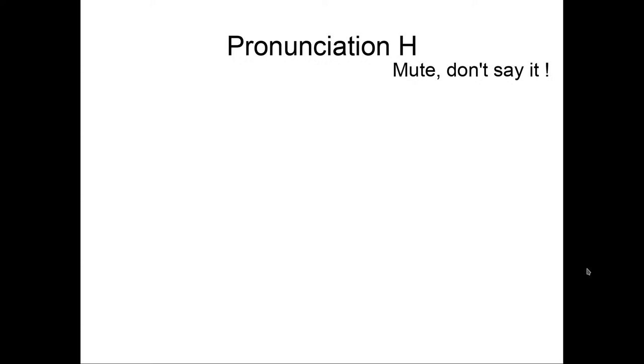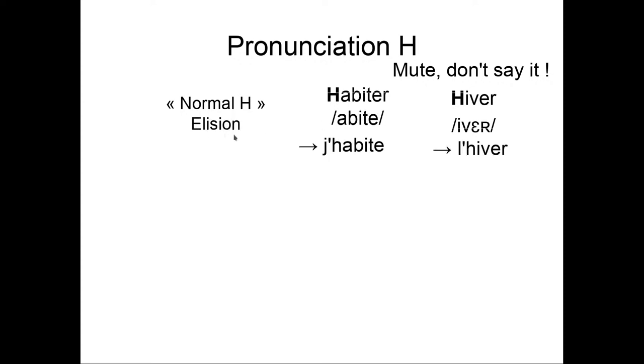And finally, we have the H. In general, it's mute. Don't say it. We don't pronounce H. There are two kinds of H. The normal H. So here, this word habiter, we say habiter. Hiver. It's a normal H. Because we don't say it. There is elision. So we don't say je habite. We say j'habite. We don't say le hiver. We say l'hiver. And there is liaison. We say en. We say habitant. But we say en habitant.